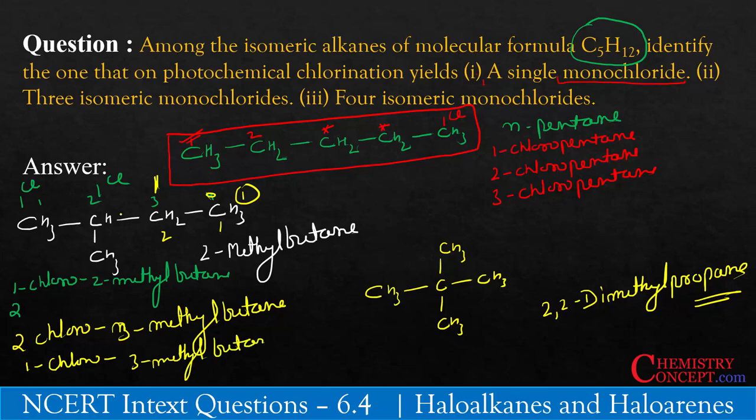So in the second case, there are four possible structures. Now, if you have a look at the third one, all the carbon positions are identical. Wherever you put chlorine, it will be the same compound. All the CH3s are same. Wherever you put chlorine, the name will be 1-chloro-2,2-dimethylpropane.